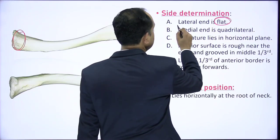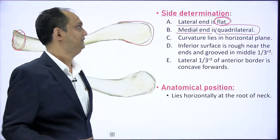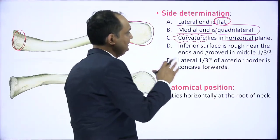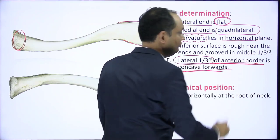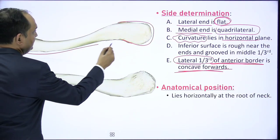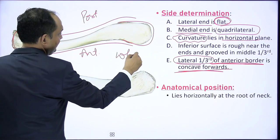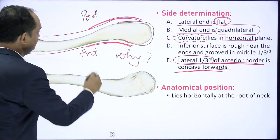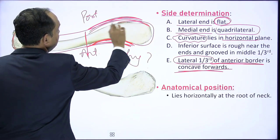The second criterion for side determination is about the curvature — you have to keep it horizontally. The lateral one-third of the anterior border is concave forward, meaning the anterior border of the lateral third is concave and the posterior border automatically becomes convex. In the diagram, you can see the anterior border and posterior border clearly. The lateral end has concavity anteriorly and convexity posteriorly.